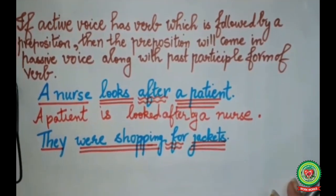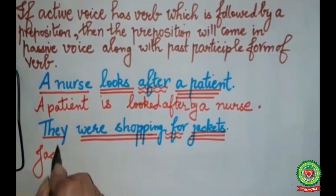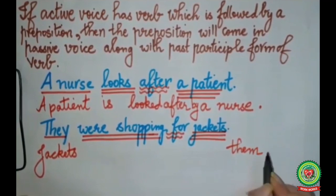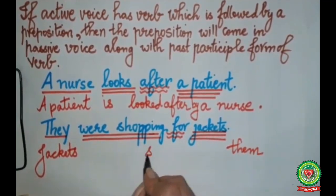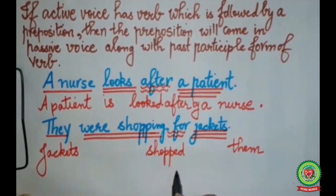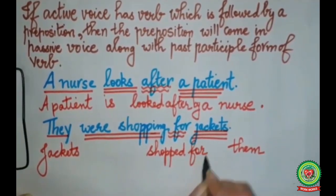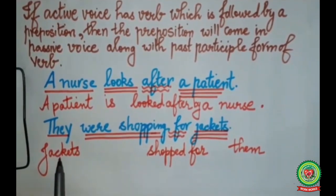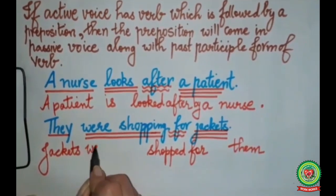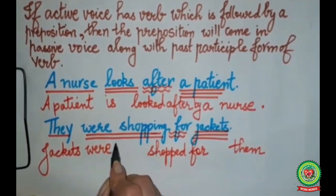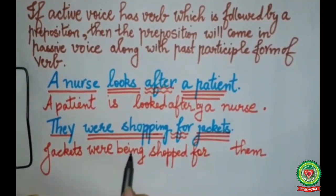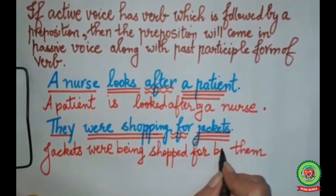Similarly in the second sentence: Jackets will come in the beginning, they will go to the last and become them. Shopping will change into shopped. After shopping, for is given as the preposition and it will come in the passive form also. With the jackets we use were (plural). The -ing form is given so we add being. The sentence becomes: Jackets were being shopped for by them.